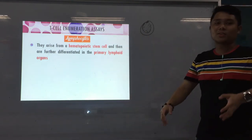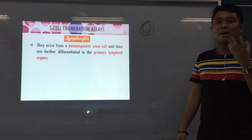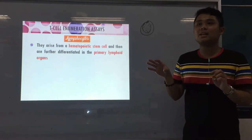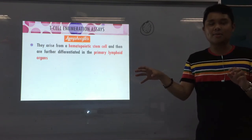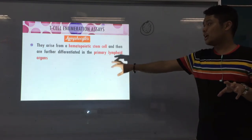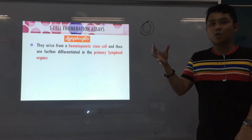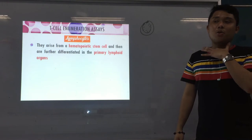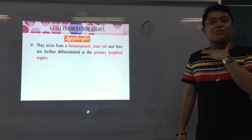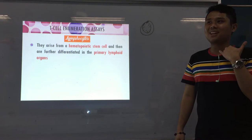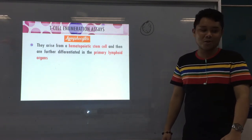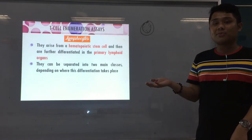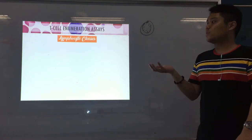As with the rest of your white blood cells, lymphocytes come from a hematopoietic stem cell origin. But unlike other WBCs, which are of the myeloid origin, lymphocytes have a lymphoid origin. They also differentiate in your lymphoid organs — primary lymphoid organs include the thymus. Lymphocytes can be divided into two main classes depending on where differentiation takes place.